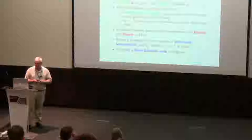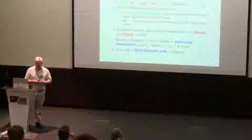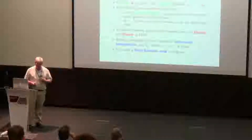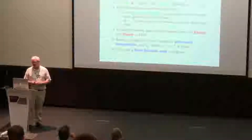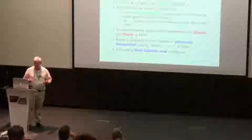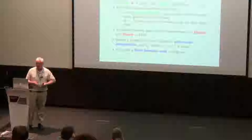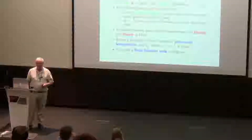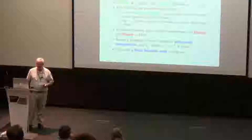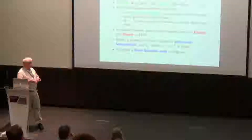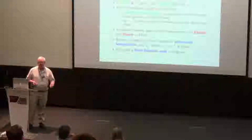This notion of a threshold scheme was introduced independently at roughly the same time by Bob Blakely and Adi Shamir in 1979. Shamir's threshold scheme is a very simple way to build these schemes for any values of T and N. It's based on polynomial interpolation over any finite field, and it's really a Reed–Solomon code in disguise, using the erasure properties of a Reed–Solomon code.